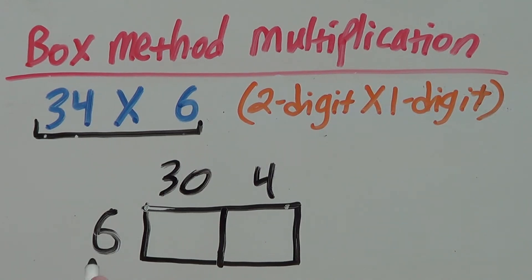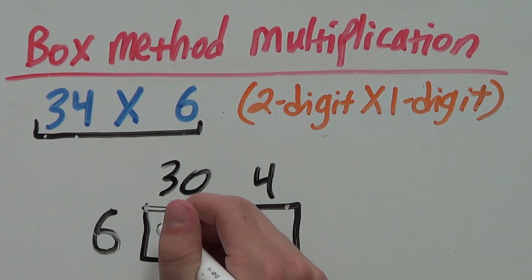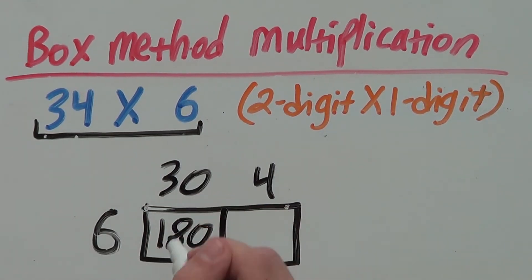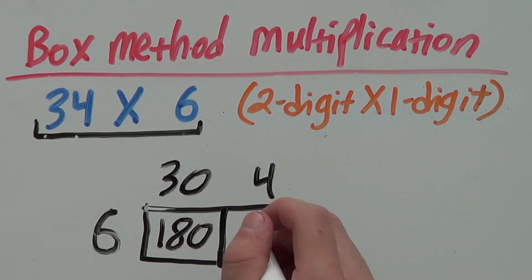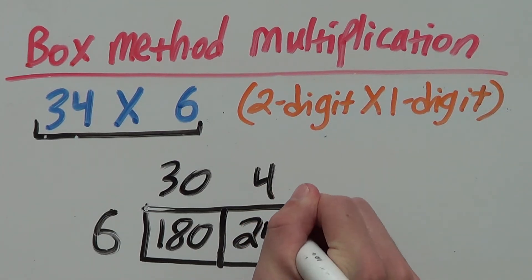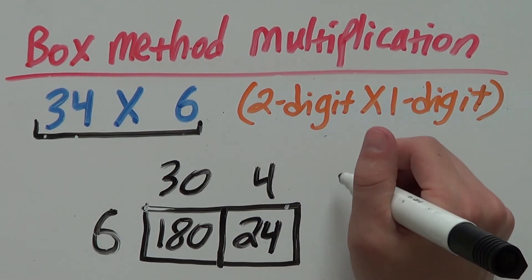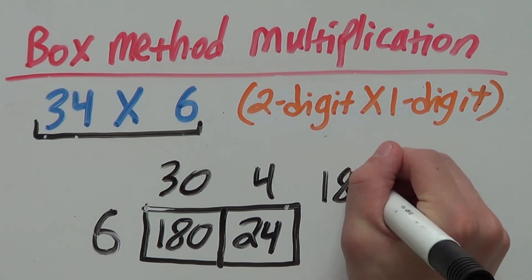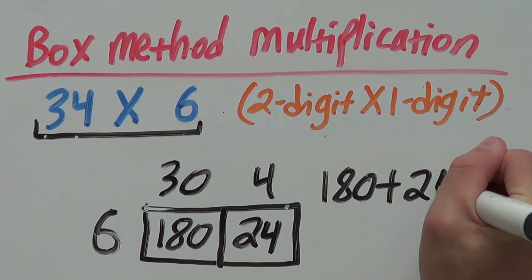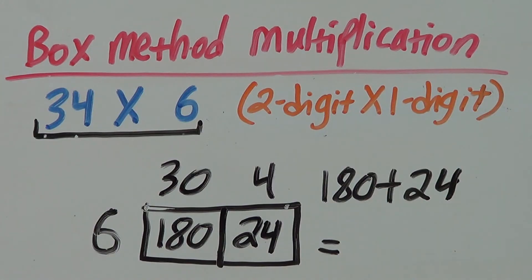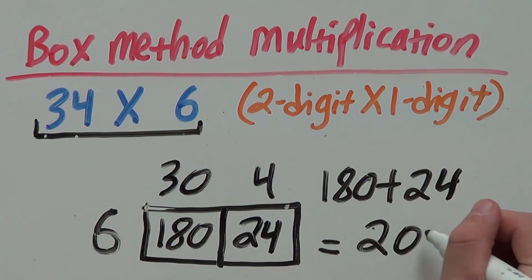Next, we just have to multiply 6 and 30. 6 times 30 is 180 and 6 times 4 is 24. Last but not least, if we add these 2 together, 180 plus 24, that will give you 204.